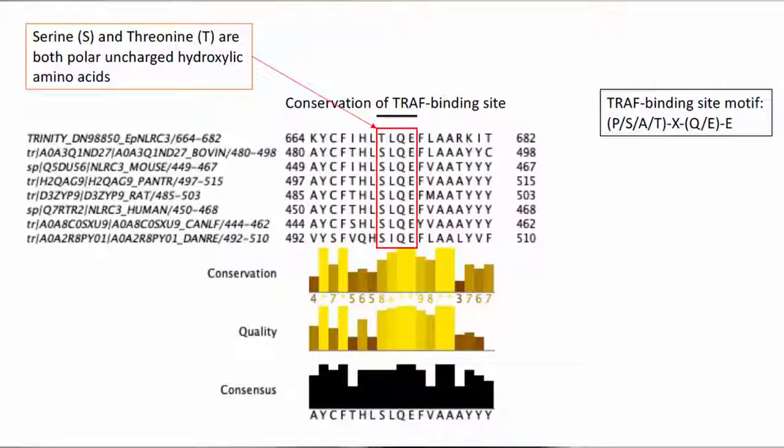By using bioinformatic tools, I identified important sections of my genes of interest. NLRC3-like possesses TRAF binding motifs that can bind to a key member of the NF-κB pathway, TRAF6.